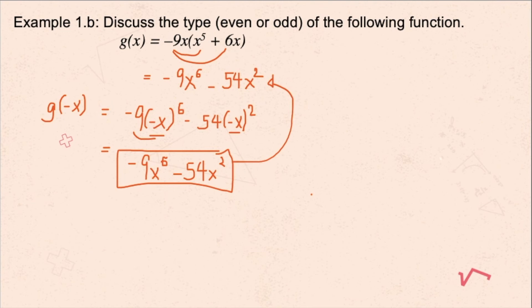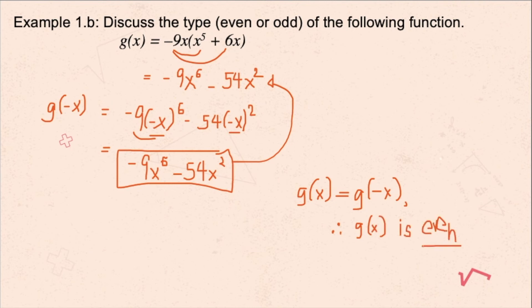So our g(-x) is -9x⁶ - 54x², which is equal to the given g(x). Since g(-x) equals g(x), we can say that g(x) is an even function. You don't have to identify negative g(x) because we already arrived at g(-x) equaling g(x).